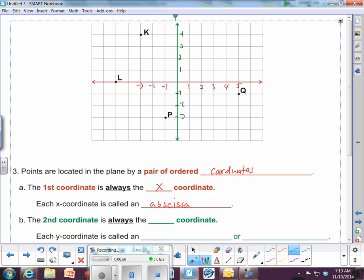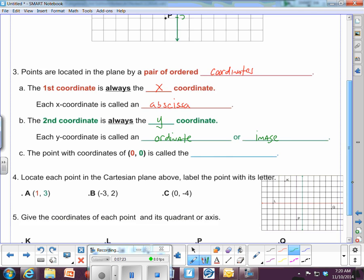All right, and then the second coordinate is always the Y coordinate. And each Y coordinate is also called an ordinate. Just get rid of the co from coordinate, and you have ordinate, O-R-D-I-N-A-T-E. Now, it's also got another name. You could call it the ordinate, or you could call it the image. And you'll hear it called both, the ordinate or the image.